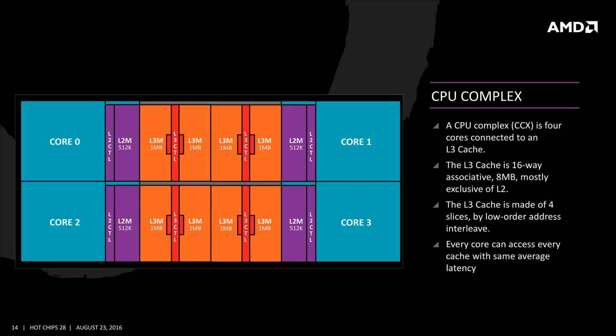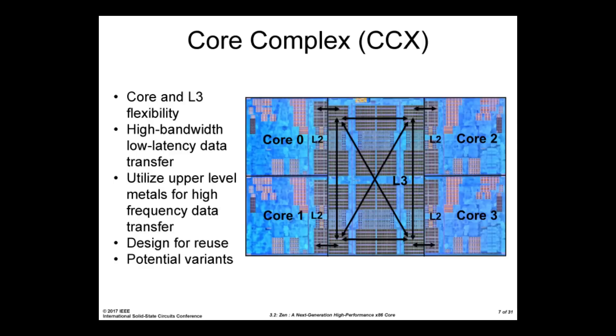Firstly, Zen cores are organized in a compute complex of 4 cores with their own L2 cache and a shared L3 victim cache. Zen uses its L3 as a pool of backup cache for when the L2 spills over, moving the least used data to the L3. Upon subsequent L2 cache refilling, if the L3 already contains the data, it can quickly be accessed, leading to a performance gain. There is a good reason for this approach, as all 4 cores within the CCX are fully coherent with the entirety of the L3. It's not 2MB L3 per core — it's 8MB L3 for all cores, an important distinction.